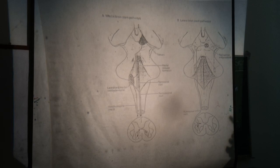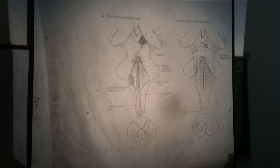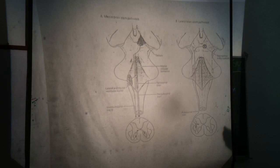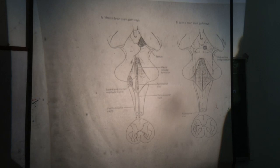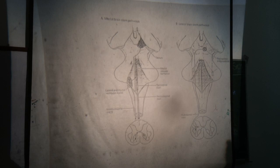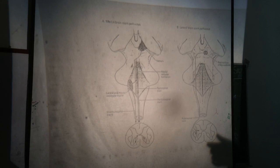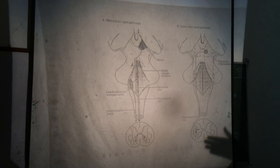This is the lateral vestibulospinal tract — the main tract — which originates from the lateral vestibular nucleus. Through this tract, the cerebellum and inner ear control the activity of the alpha and gamma motor neurons. Keep in mind that the vestibular nuclei receive nerve fibers from the cerebellum and inner ear.